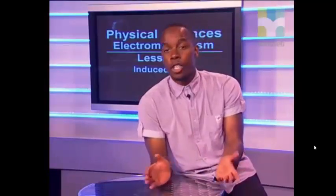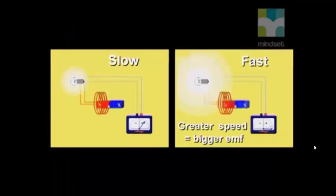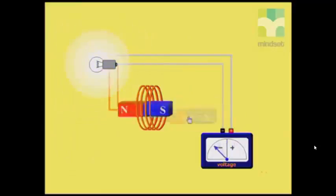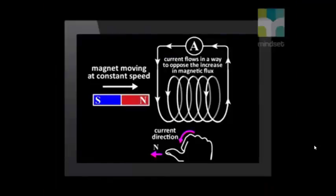We looked at electricity that produced magnetic fields. We then investigated the reverse of this, where magnetic fields produce electricity. Electromagnetic induction occurs when a changing magnetic field induces an EMF and a current in a conductor. The induced current depends on the speed of the magnet relative to the conductor, the magnetic flux density, and the number of turns in the solenoid. The induced current flows in such a direction that its magnetic field opposes the changing magnetic field that induced it. The right-hand solenoid rule can be used to determine this induced current direction.